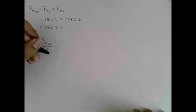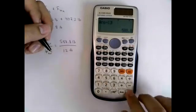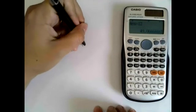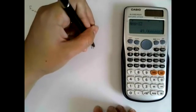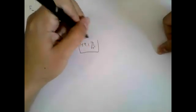Now that I have the total weight, I can find the specific weight of the mixture: total weight divided by total volume. That's 588.8 pounds divided by 12 cubic feet, which gives a specific weight of the mixture of 49.1 lb/ft³.